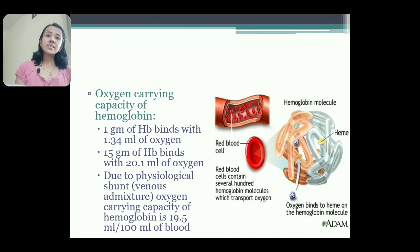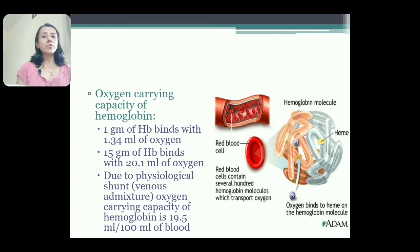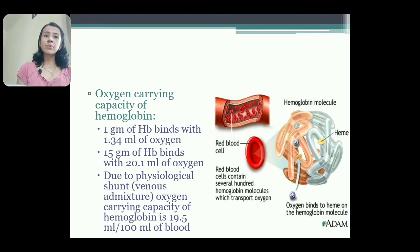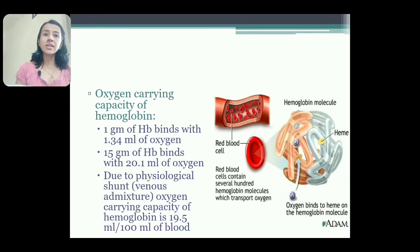Oxygen carrying capacity of hemoglobin: one gram of hemoglobin combines with 1.34 ml of oxygen. Hemoglobin concentration in blood — in males it is 14 to 18 grams per deciliter and in females 12 to 15 grams per deciliter. Taking 15 grams, 1 gram hemoglobin binds with 1.34 ml of oxygen, therefore 15 grams of hemoglobin binds with 20.1 ml of oxygen. So oxygen carrying capacity of blood is 20.1 ml per 100 ml of blood.